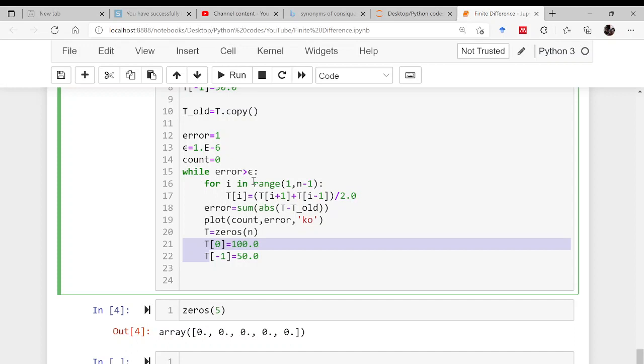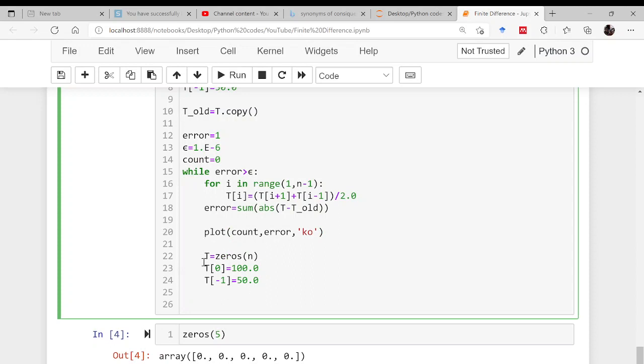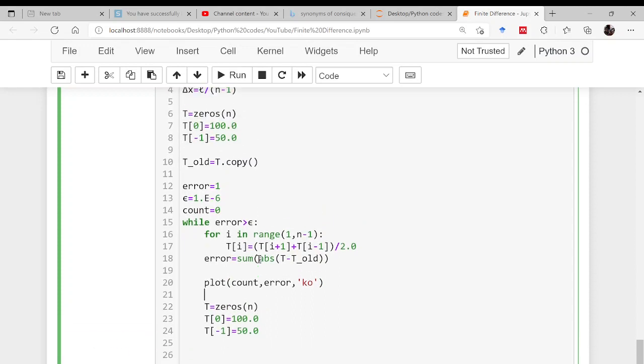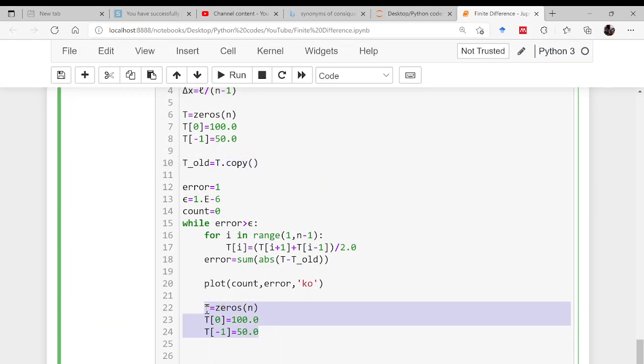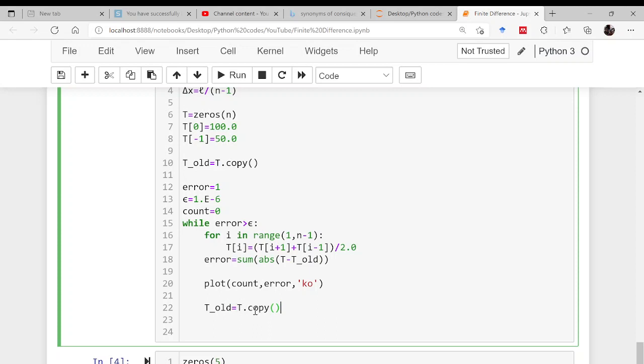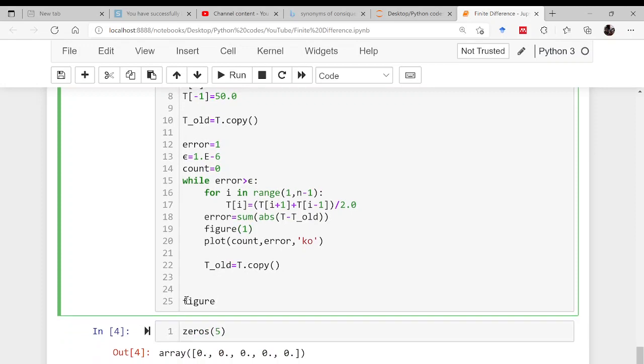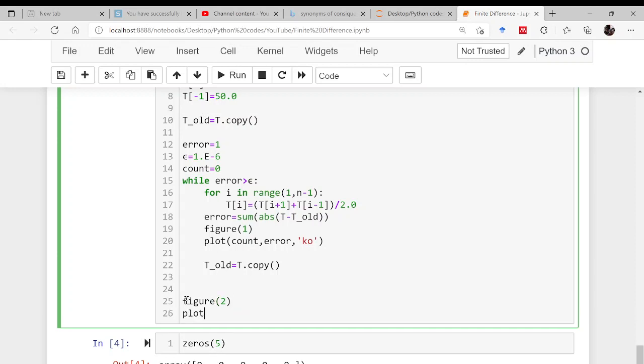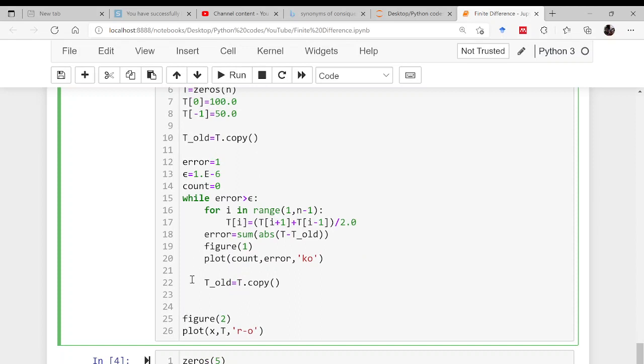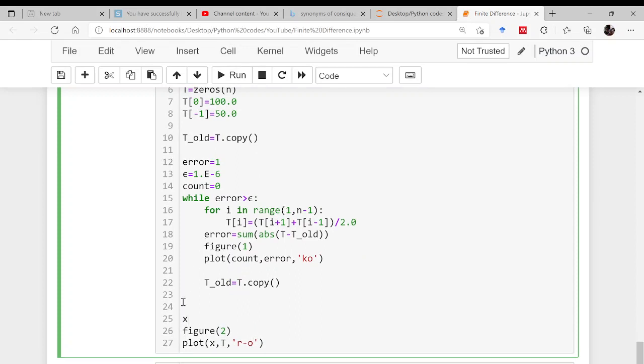This is your main loop where you are iterating over, this is the error evaluation, this is the plotting of your error, and then this is the updation of your old with the new so that I can compare in later stages. Once this is done, I can name this figure as figure 1 and then let us move to figure 2. Here this is the final one where I will be plotting my result x and t with some red color and circular marker. Now, what is x? X has not been defined yet. There is a function linspace I have already explained to you. x is equal to linspace from 0 to L and how many nodes? N. So in this way, I can solve the simple problem.